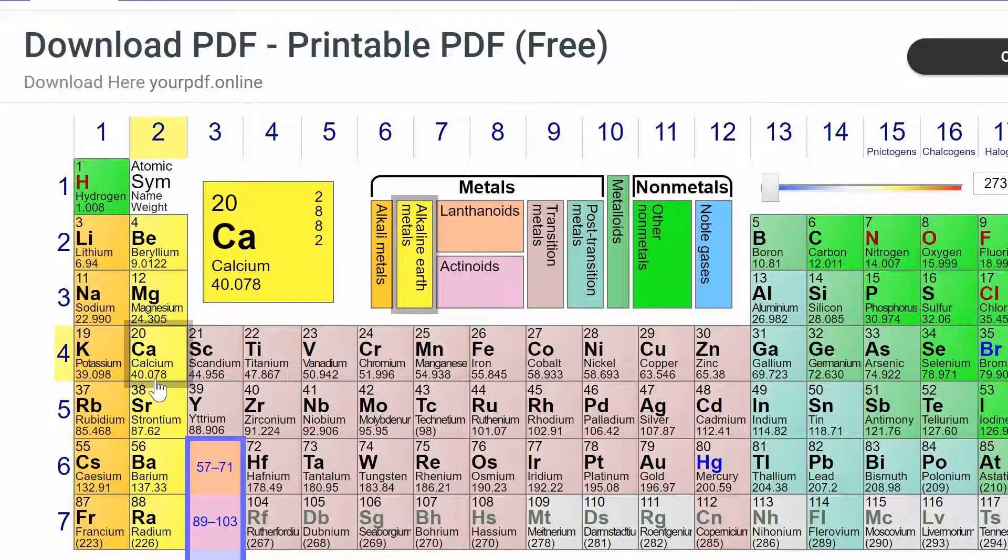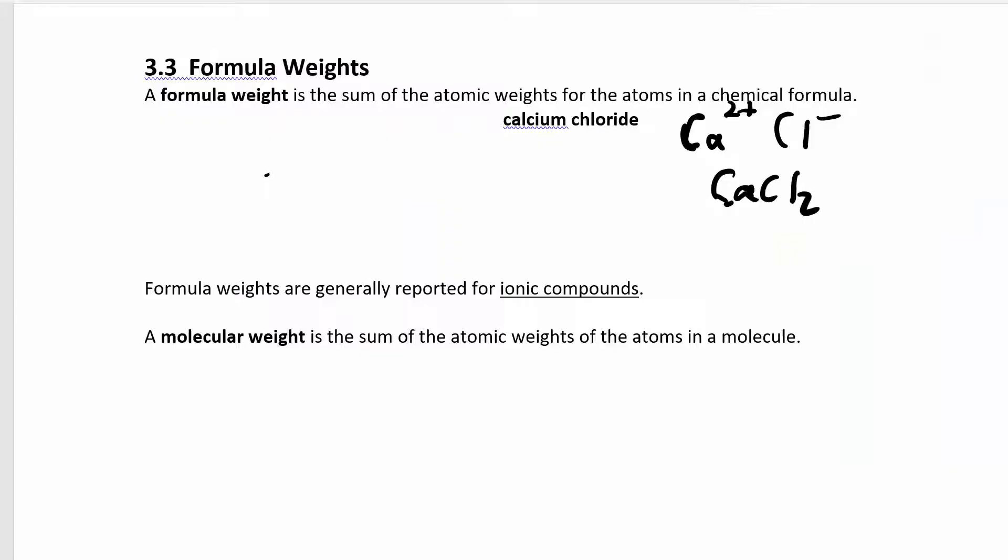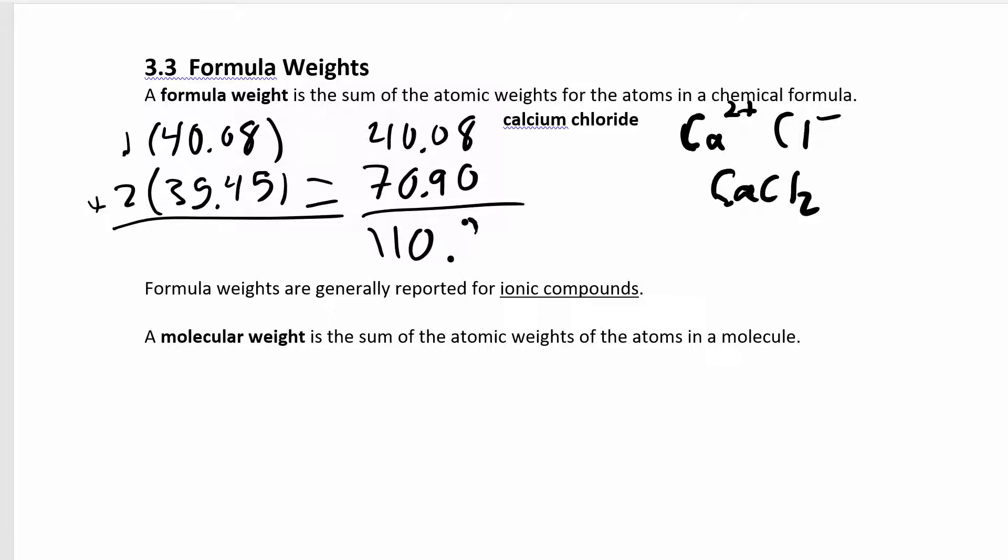We want to look up the atomic weights for calcium. Let's go to two decimal places, this is 40.08, and the chloride ion is 35.45. So we have one calcium at 40.08 and two chloride ions. 2 times 35.45 is 70.90, and 1 times 40.08 is 40.08. When you add all those up, you get 110.98 atomic mass units.